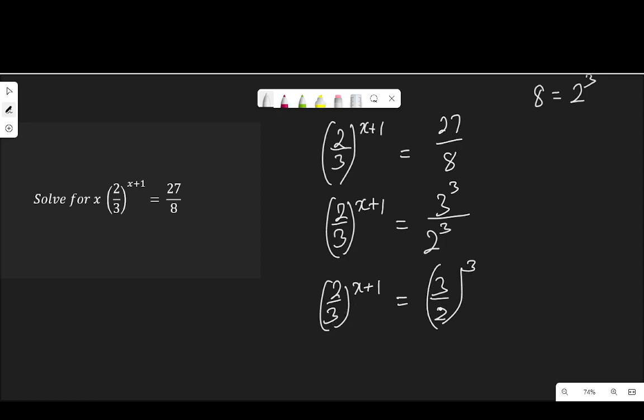And this is an exponential equation. To solve an equation like this, we equate the powers if the bases are the same. On the other hand, if the powers are the same, we equate the bases. But if you look at this equation, here we have 2 over 3, but here we have 3 over 2. They are not the same. The bases are not the same, and the powers are not the same.